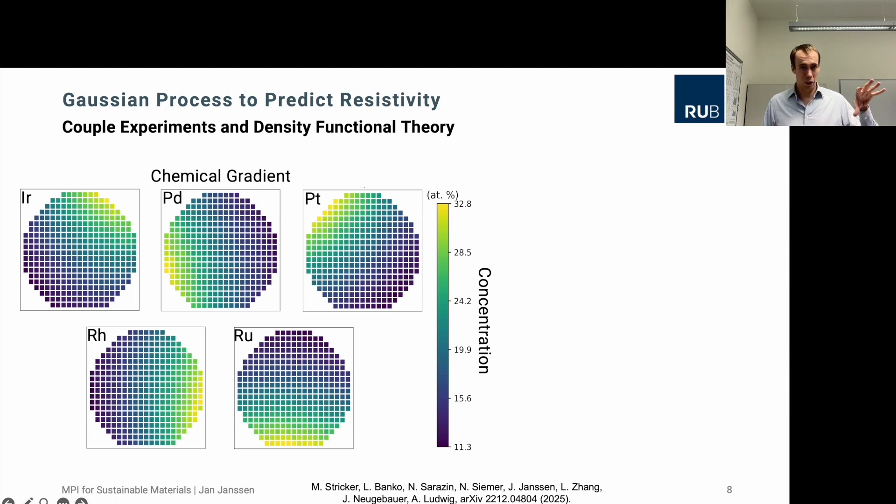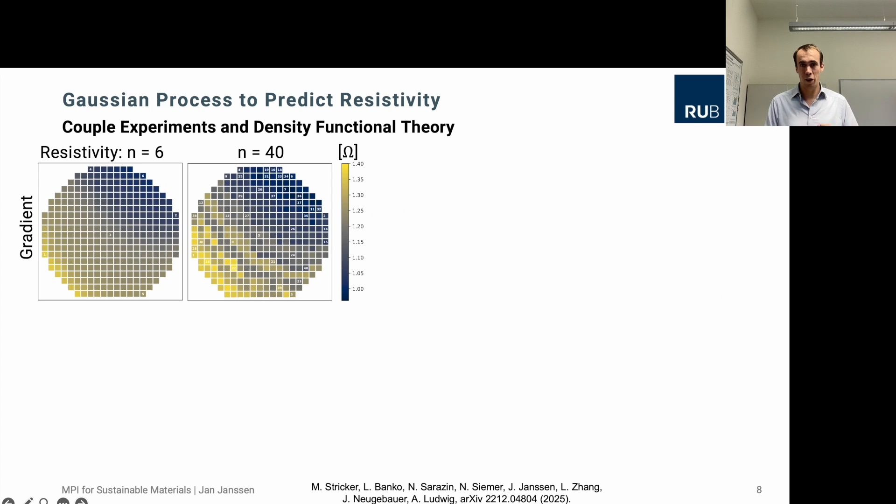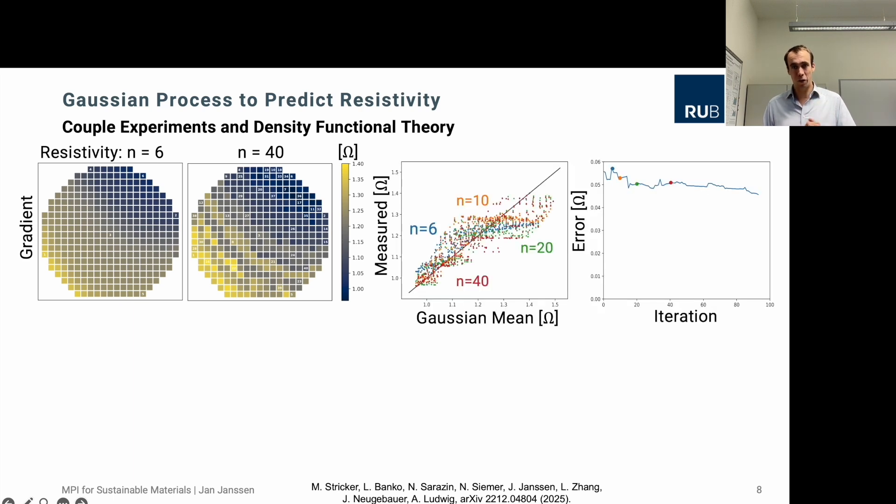This is what was shown here. We see one of these wafers and then the different elemental gradients inside this wafer, where yellow indicates a high concentration and then the dark blue a very low concentration of the specific element. And we see the corresponding measurements. First the experimental measurement on top of the resistivity and then the DFT predictions of the resistivity. There are still differences, but we can now combine both in the same Gaussian process. As a first step we tried to use the gradient from the density functional theory and directly combine it with the experimental results. But this didn't work so well. We still see differences here and it didn't really accelerate our prediction.